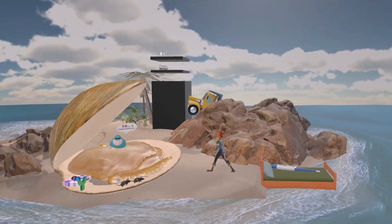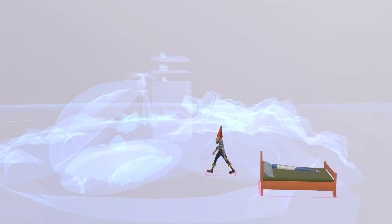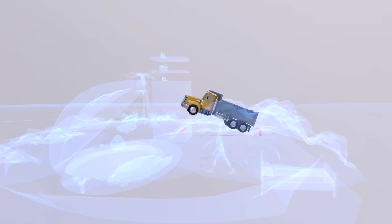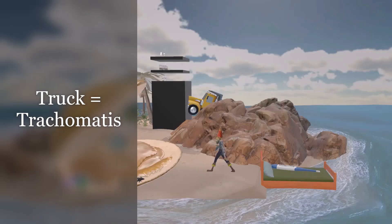This is our scene on Chlamydia trachomatis. In a previous scene, we spoke about Chlamydia overview represented by the clam, and then walking pneumonia represented by the walking gnome. Now we're going to talk about trachomatis, represented by the truck over here. The truck is going to remind us of Chlamydia trachomatis. So let's begin.